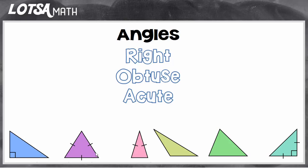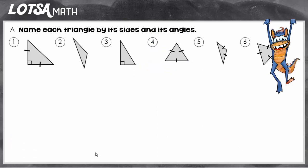Let's do some examples together — we have to name each triangle by its sides and its angles. On number one I see that it has two sides that are the same, because of the tick marks — same, same — that reminds me of isosceles. And since I see a right angle, it's a right triangle. So this is an isosceles triangle by its sides, and a right triangle by its angles.